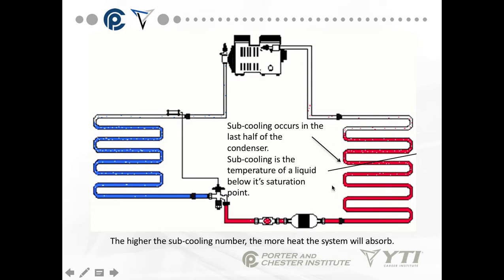Sub-cooling occurs in the last half of the condenser. We come in as a superheated vapor, condense from vapor to liquid, then further cool below what's considered its saturation point — the point where all the vapor becomes a liquid. The higher the sub-cooling number, the more heat the system will absorb.